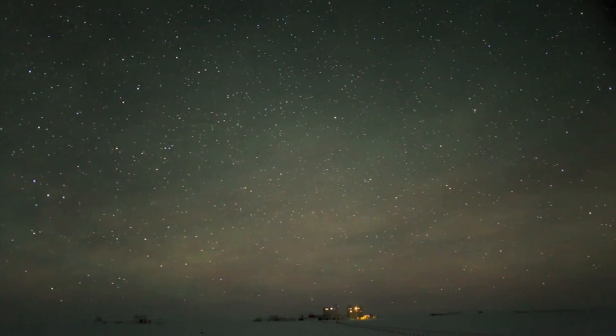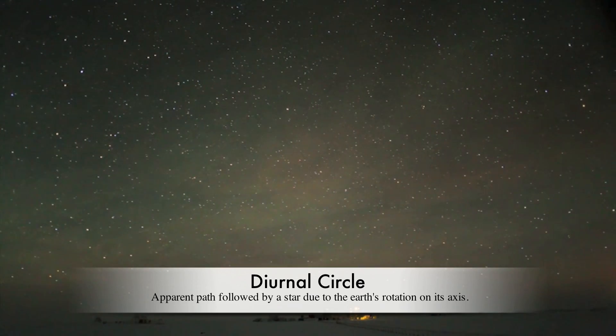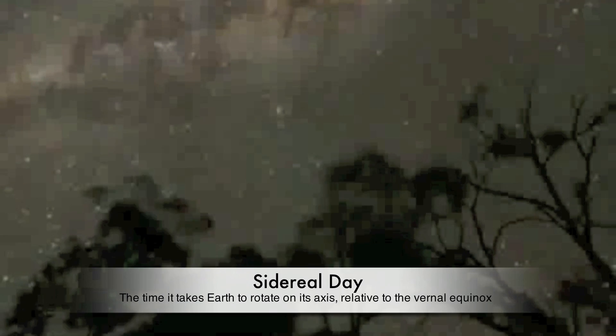The stars will appear to trace circles throughout their orbit, known as the diurnal circle. From our reference point, it takes a star about one sidereal day to complete a circle. This is a time period of 24 hours.